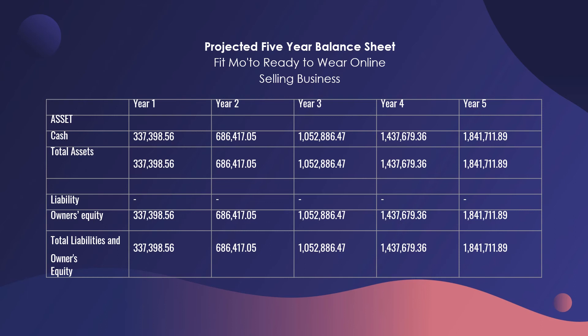For the projected balance sheet, on the asset side we have a total cash for the first year of 337,398.56. For liabilities, it is assumed that in the first year there are no liabilities, so that is left blank. Owner's equity is 337,398.56. Remember that in a balance sheet, Assets must equal Liabilities plus Owner's Equity — and as you can see in our example, it is balanced.